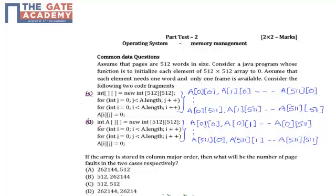Next, Code B: int a[][] = new int[512][512]. For int i = 0, i less than a.length, i++. For int j = 0, j less than a.length, j++. A[i][j] = 0. For this code, elements will be accessed as: A[0][0], A[0][1], and so on, up to A[0][511], then up to A[511][511].